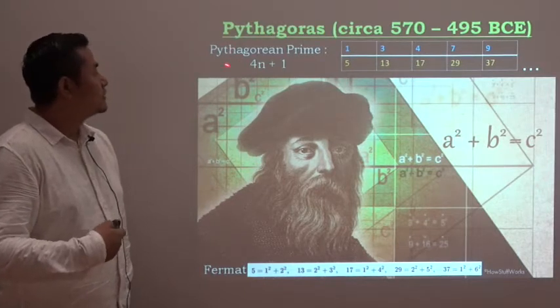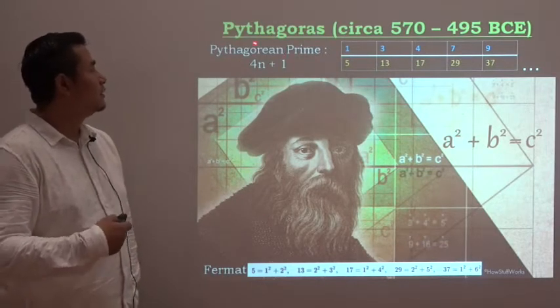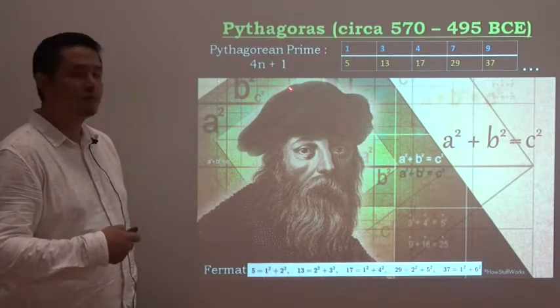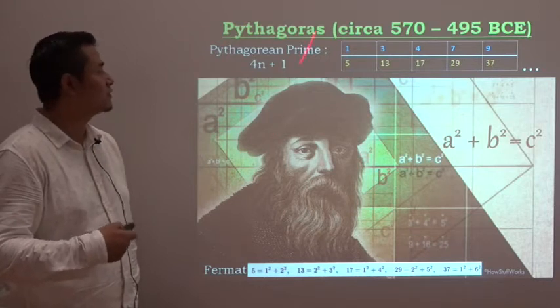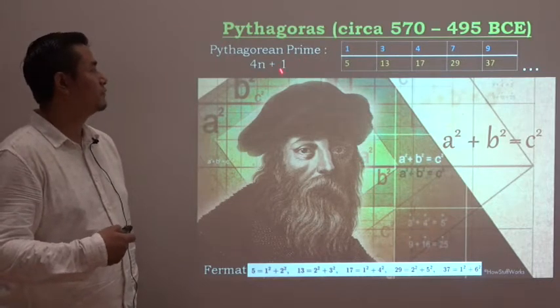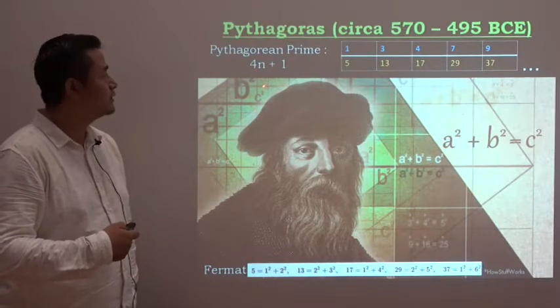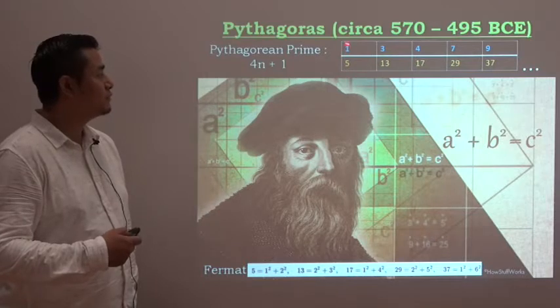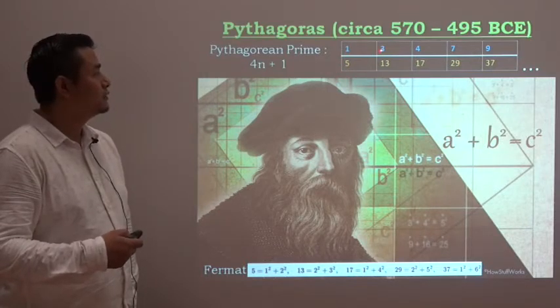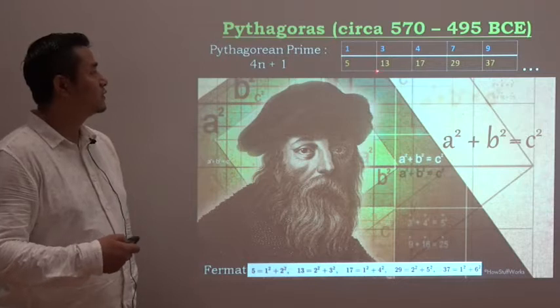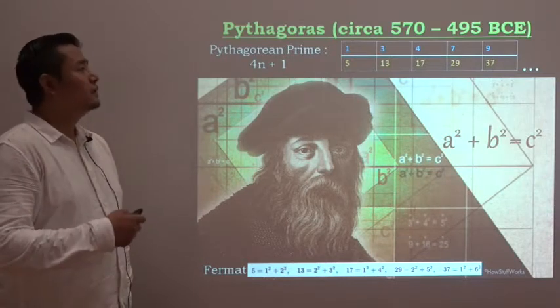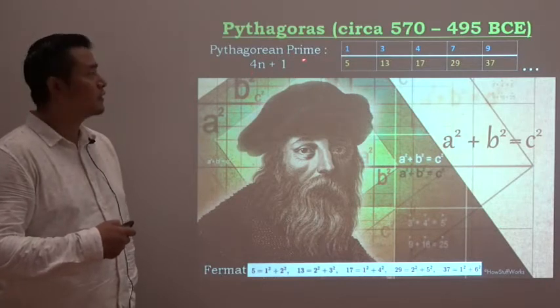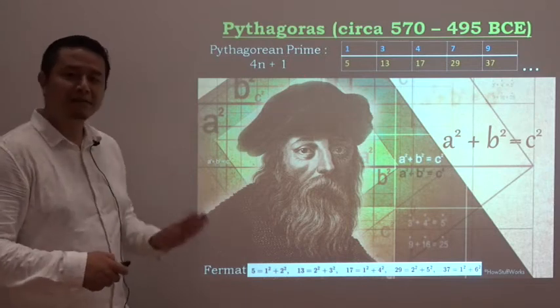Pythagoras had devised one formula called Pythagorean primes, which is of the form 4n plus 1. When n equals 1, we get 5, and when n equals 3, we get 13, and so on. Prime numbers that can be written in the form 4n plus 1 are called Pythagorean primes.